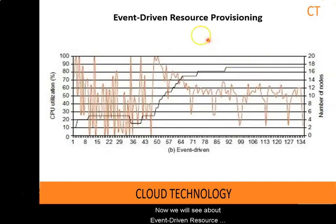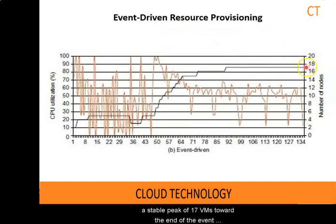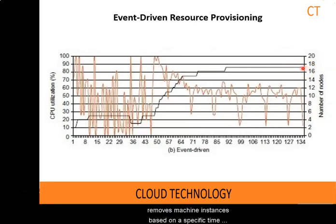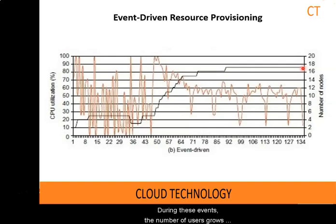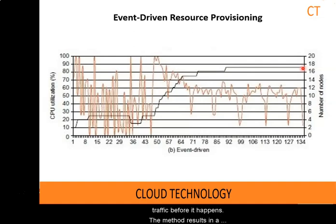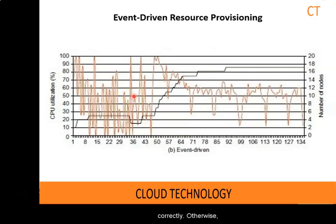Now we will see about event driven resource provisioning. The event driven method reaches a stable peak of 17 VMs towards the end of the event and drops quickly, as shown in the diagram. This scheme adds or removes instances based on a specific time event. The scheme works better for seasonal or predicted events such as Christmas time in the west and Lunar New Year in the east. During these events, the number of users grows before the event period and then decreases during the event period. This scheme anticipates peak traffic before it happens, resulting in minimal loss of QoS if the event is predicted correctly; otherwise, wasted resources are greater for events that don't follow a fixed pattern.